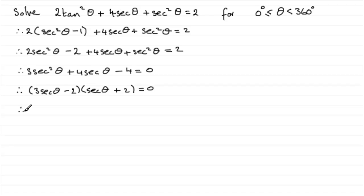So it means that either 3secθ - 2 equals 0 or the other factor secθ + 2 equals 0. So if we take the first factor we're going to make secθ the subject. If we add 2 to both sides that means 3secθ equals 2. Divide by 3 and you get that secθ equals 2/3. And for the other one if we subtract 2 from both sides we end up with secθ equals -2.